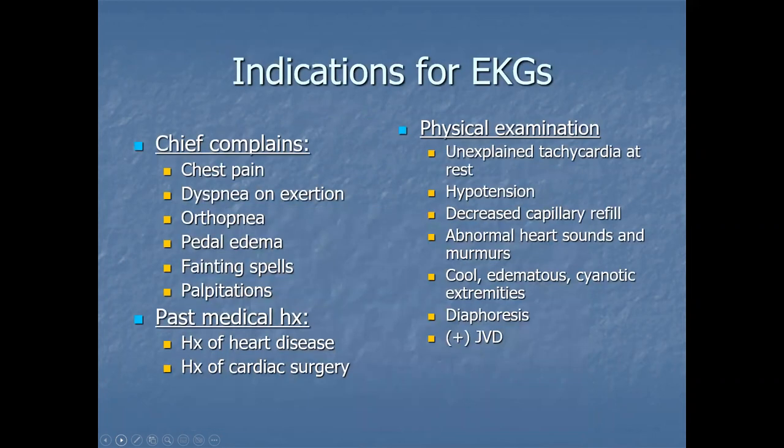Looking at some of the indications: an individual presents to the emergency room with chest pain. One key aspect for the triage nurse or physician is to determine whether this chest pain is cardiac in nature or something orthopedic — perhaps the patient fell, had recent surgery, or something along those lines. So really to delineate: is that chest pain orthopedic or cardiac in nature?